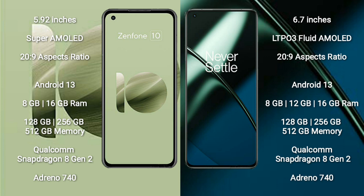Asus Zenfone 10 comes with 8GB or 16GB RAM and 128GB, 256GB, or 512GB internal storage, with a Qualcomm Snapdragon 8 Gen 2 processor and Adreno 740 GPU. OnePlus 11 comes with 8GB, 12GB, or 16GB RAM and 128GB, 256GB, or 512GB internal storage, with a Qualcomm Snapdragon 8 Gen 2 processor and Adreno 740 GPU.